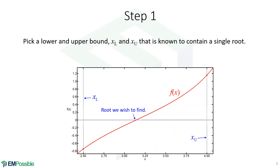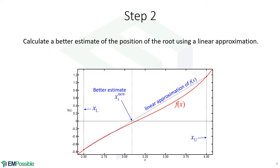Let's go through a few steps. We start by defining upper and lower bounds that span a single root. Here we're showing the function — it's a little bit nonlinear — and here's the actual root we want to find. The first thing we'll do is take the points at the lower and upper bound and pretend there's a line connecting them. Where this line crosses zero is how we estimate the position of the root. The more linear the function, clearly the better that guess will be.